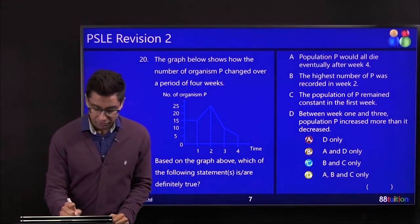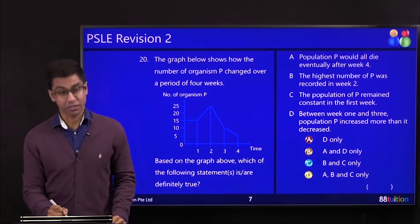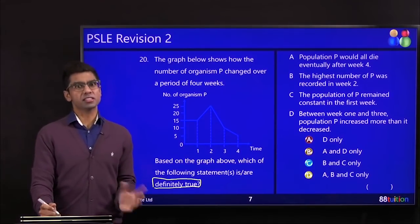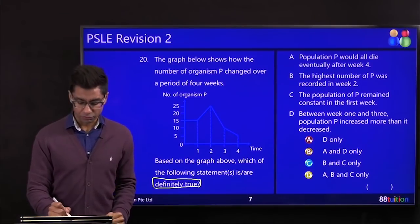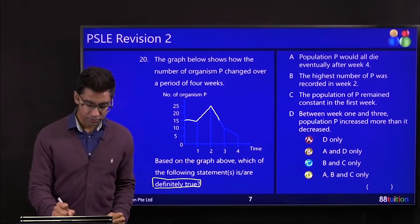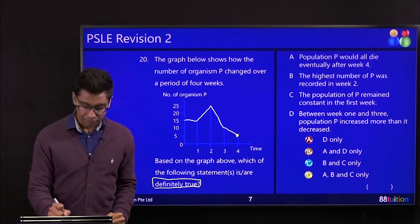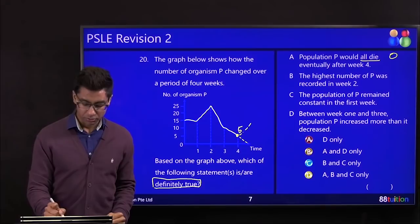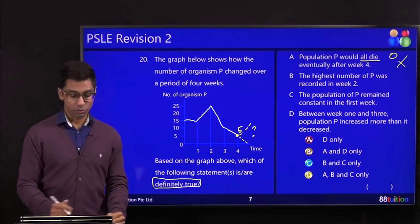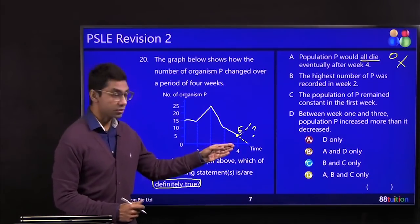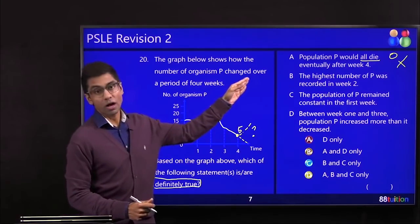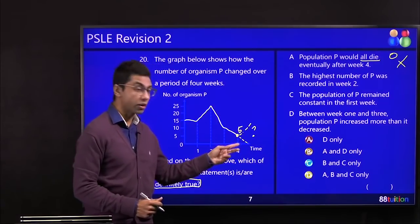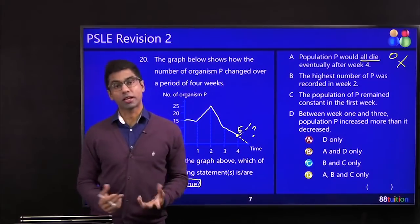A very easy graph. You just need to read the data. Based on the graph which of the following are definitely true. Again exactly the same question. Definitely. You got to be 100% sure it's true. If it's a guess, don't guess. Population P will all die eventually after week 4. What's the number here? 5. If all die, it has to be 0. How do you know all will die? Will it go to 0 or will it go up? Don't know right? It's a question mark. You're not sure. So please do not choose A. Don't think it will just go down. What goes down doesn't mean always goes down. Just like this. What goes up doesn't mean always will go up. It may suddenly turn and come down. So you don't know what can happen after week 4.